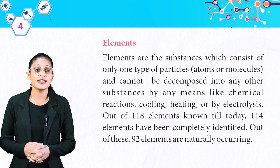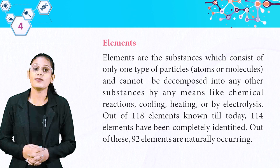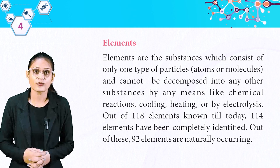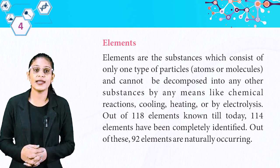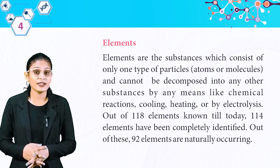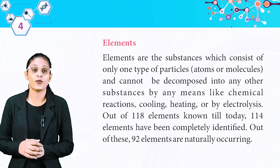Out of 118 elements known till today, 114 elements have been completely identified. Out of these, 92 elements are naturally occurring. So students, total elements we have are 118, and 92 are naturally occurring.